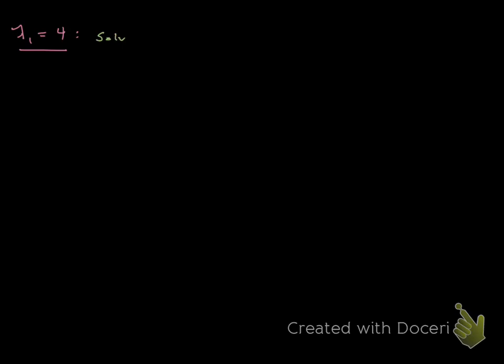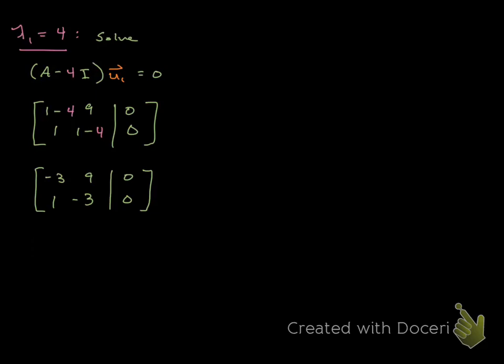First I take λ₁ = 4. Then I want to solve the system (A - 4I)u₁ = 0. So I set up the matrix [1-4, 9; 1, 1-4] augmented with the 0 vector. That leaves me with [-3, 9; 1, -3] augmented with [0; 0]. I can do a system of equations here in augmented matrix form. Row reduced echelon form.